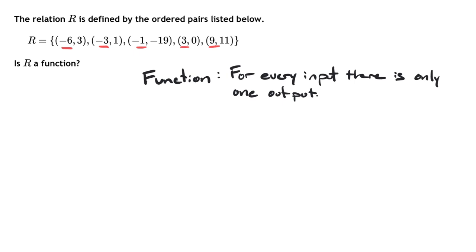So the only way this would not be a function is if another one of these coordinate points, like if this negative 3 was actually a 3, to match up with one of those other x values, and have the y values be different.